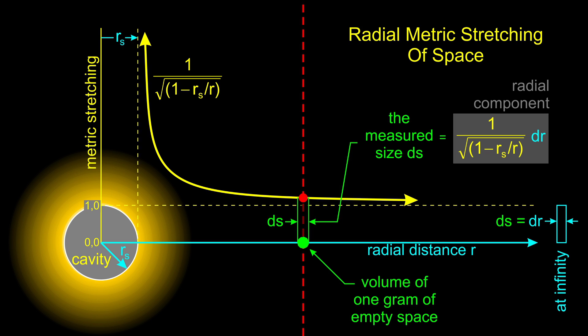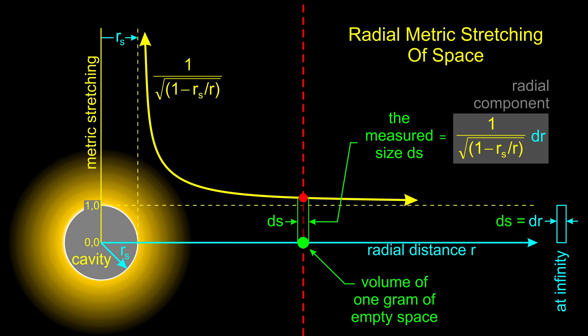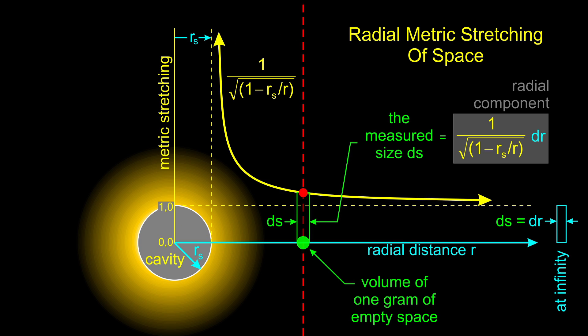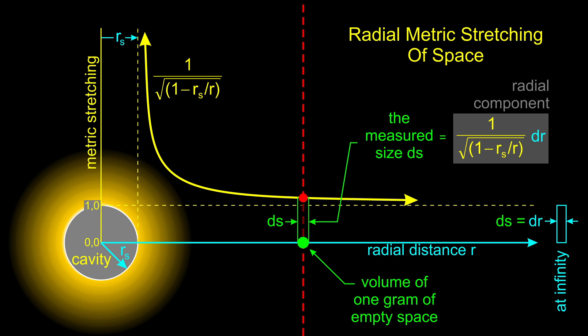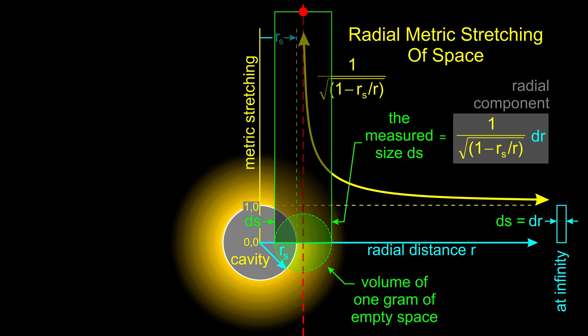The small interval dr is multiplied by the leading fraction, making the interval larger than it would otherwise be. Note that the metric stretching increases dramatically as you approach the cavity. At the edge of the cavity, at the Schwarzschild radius, the metric expansion becomes infinite. Because of this metric stretching, the volume occupied by, say, one gram of empty space is measured to be larger than it would be in unstretched space. The one gram of space gets spread out over a greater volume, and because of this, its density goes down. Space is thinned out by metric stretching. As the metric stretching increases, the density of space decreases. The two are inversely related.